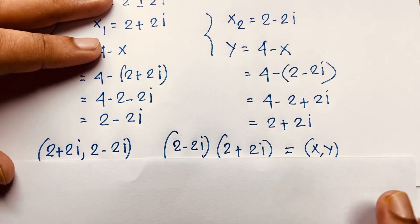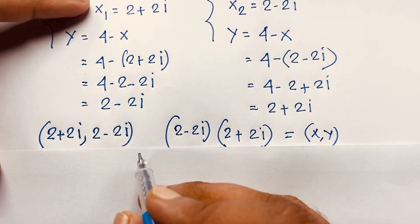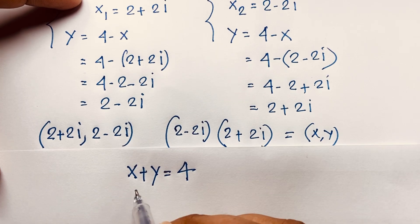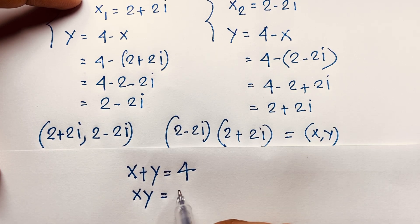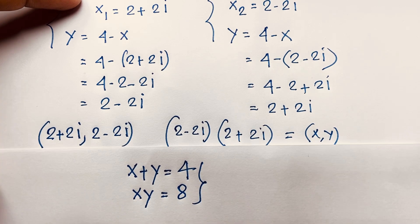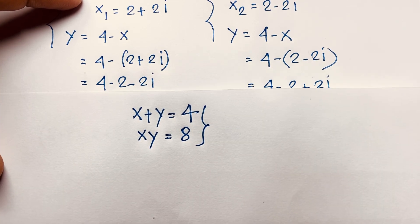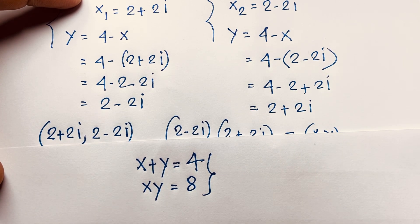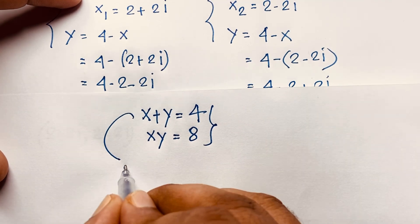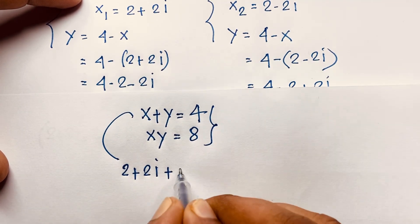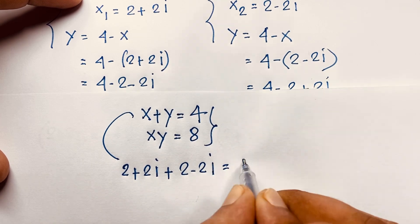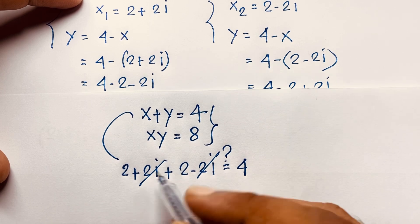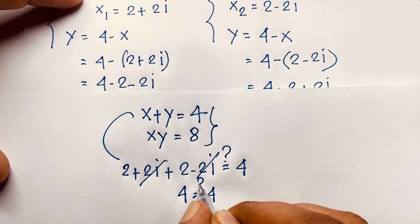Let's check our answer. The first equation: x plus y equals 4. With x equals 2 plus 2i and y equals 2 minus 2i, we get (2 plus 2i) plus (2 minus 2i) equals 4. The 2i terms cancel out, and 2 plus 2 equals 4. So 4 equals 4 — left-hand side equals right-hand side.